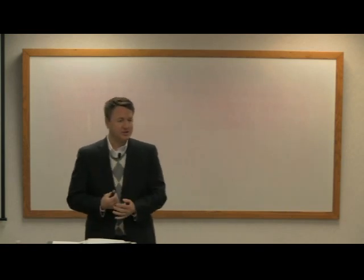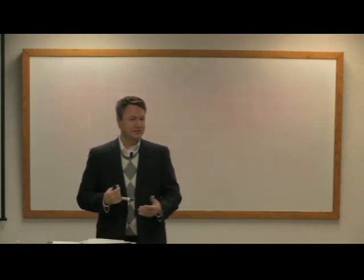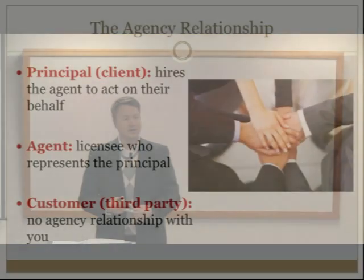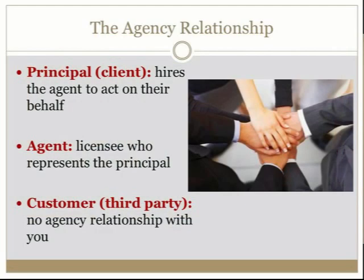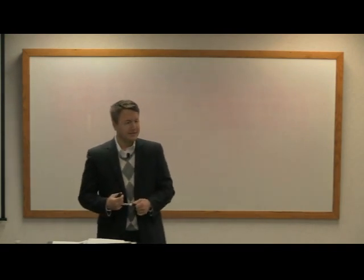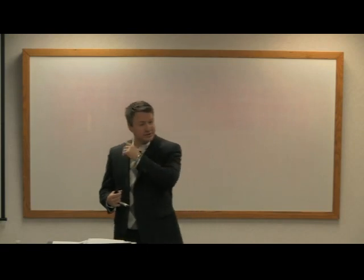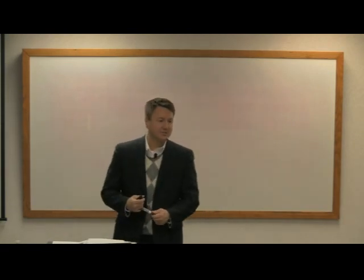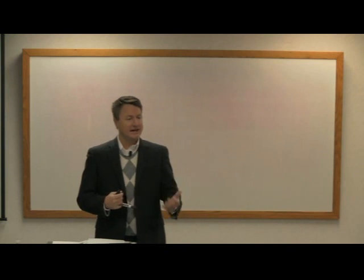To understand how this chapter rolls out: our principal is going to be the client — the person that hires us to work or act on their behalf. The agent is that licensee — we're the one representing the seller or buyer. The customer is a third party. There is no agency relationship with the customer; it's a non-fiduciary relationship.